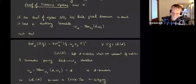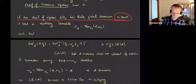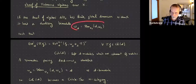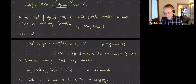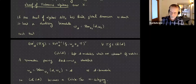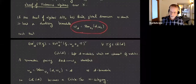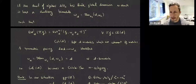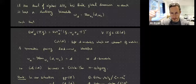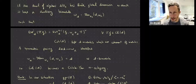If the sheaf of algebras has finite global dimension — where the dimension equals that of the base — then it has a dualizing bimodule. The formula is the same as for a finite cover: you take Hom_{O_X}(A, Ω_X). This dualizes the way you expect: Ext^i_A(F, G) ≅ Ext^{n-i}_A(G, F ⊗ dualizing)^∨. It follows from Serre duality on the base and some formulas — the same proof as in the commutative case gives you the dualizing sheaf on the finite cover.